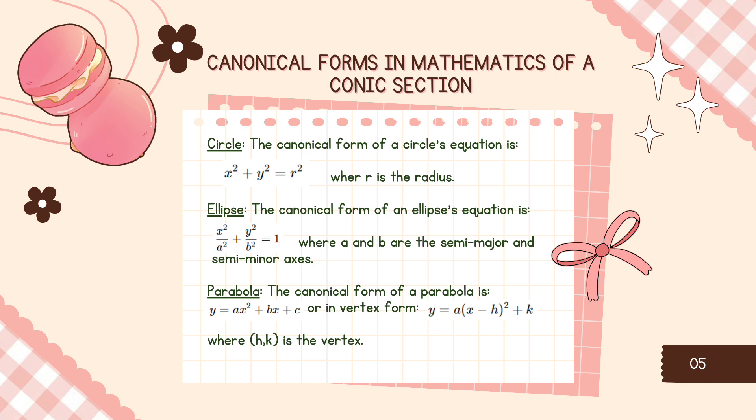Next is canonical forms in mathematics of a conic section. Conic sections like circles, parabolas, and hyperbolas have canonical forms that make it easy to recognize their properties. First is circle. The canonical form of a circle's equation is x squared plus y squared equals r squared, where r is the radius. Next is the ellipse. The canonical form of an ellipse's equation is x squared over a squared plus y squared over b squared equals 1, where a and b are the semi-major and semi-minor axes. Lastly is parabola. The canonical form of a parabola is y equals ax squared plus bx plus c, or in the vertex form, y equals a quantity of x minus h squared plus k, where h,k is the vertex.